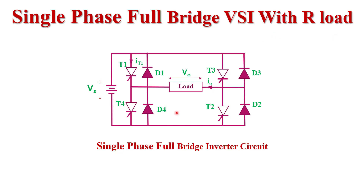Here we study the single phase full bridge voltage source inverter with resistive load. This is the circuit diagram. We use 4 thyristors T1, T2, T3, T4, which work as power semiconductor switching devices. In place of thyristors, we can also use IGBT or power MOSFET. We also use 4 feedback diodes D1, D2, D3, D4, connected in anti-parallel with the thyristors — D1 with T1, D2 with T2, D3 with T3, and D4 with T4.